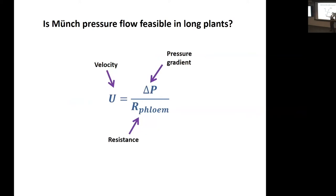When you have pressure-driven flow, the velocity is related to the pressure gradient between source and sink divided by the resistance in the tissue. Resistance is influenced by the height of the tree, the viscosity of the solution, and the anatomy of the tubes. A large group of us in Missy and Michael's lab threw everything we could at this.